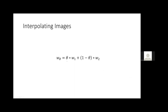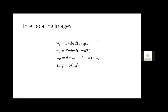Straightforward interpolation of images is one editing operation. Assuming W code embedding (could be W+, style space, or tensors), a simple linear interpolation of W codes gives you an interpolation of images. To make it explicit: embed the first image to get W code 1, embed the second image to get W code 2, do a linear interpolation, then use generator G to generate an RGB image from the interpolated W code.